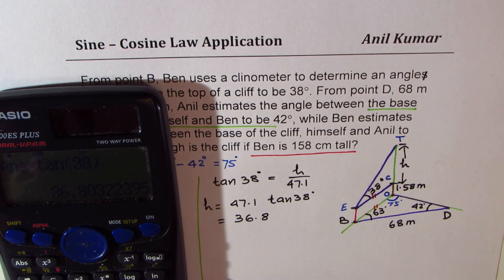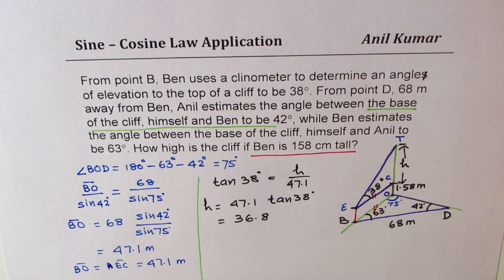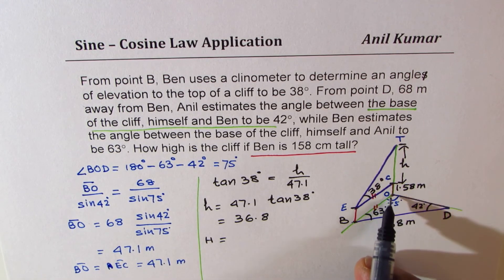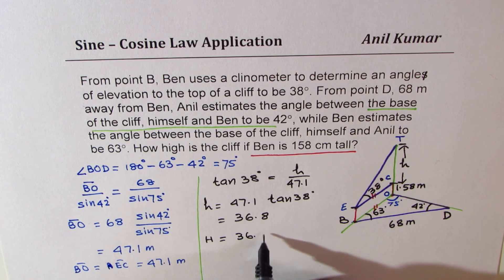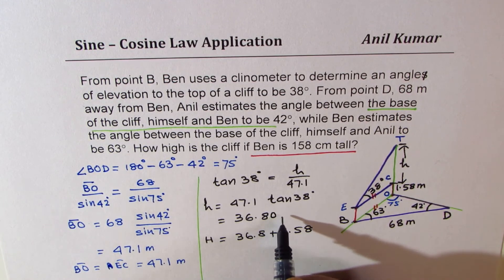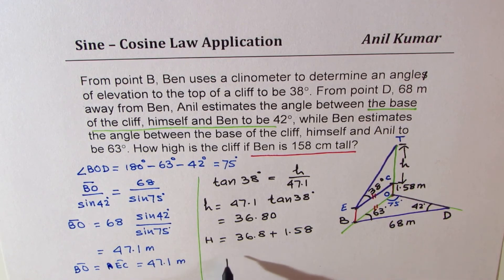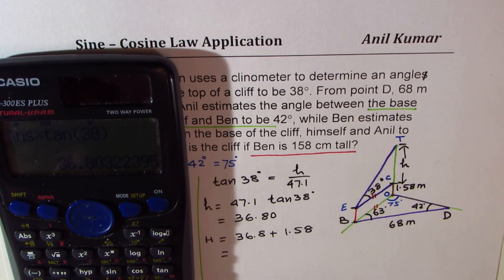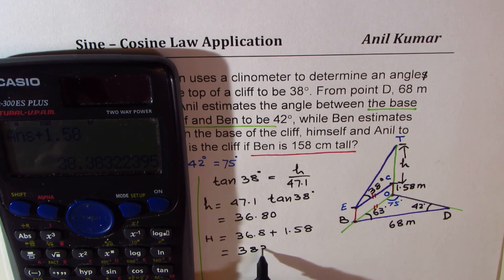We already have this angle, 47.1 times tan of 38 degrees gives us 36.8. So that becomes small h. So total height of the cliff is going to be, we have to add the height of the person. It should be 36.8 plus 1.58. Since this was two decimals, I would prefer to write this as 80. So let's add 36.80 with 1.58. And what we get here is 38.38 meters.